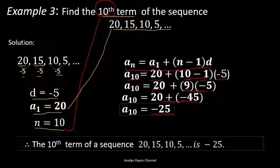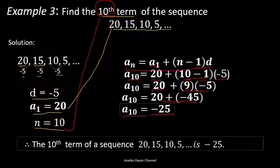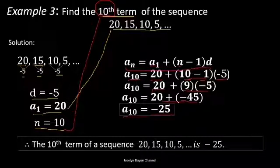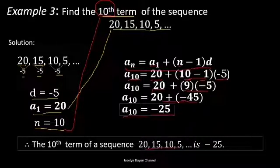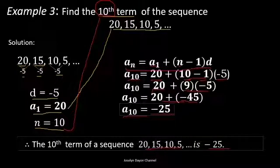So we now have the value of the 10th term. Therefore, the 10th term of the sequence 20, 15, 10, 5, and so on is negative 25.